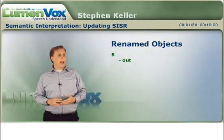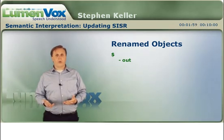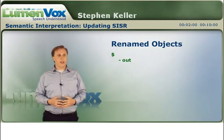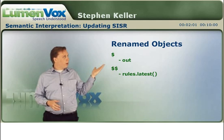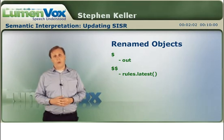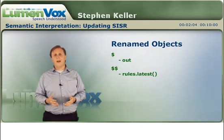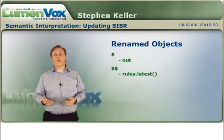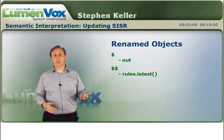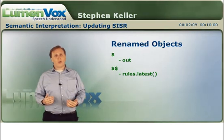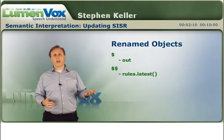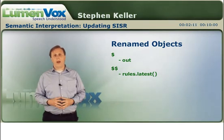The next rule variable you work with all the time is the double dollar sign rule variable. Double dollar sign meant the rule variable for the rule that was last matched — not the current rule, but the previous rule that was matched.